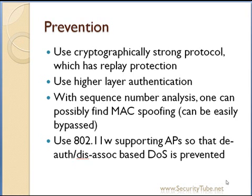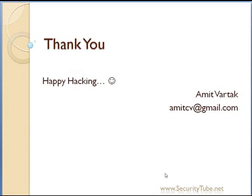You can possibly use IEEE 802.11w-supporting access points so that deauthentication and disassociation-based DoS attacks can be prevented. You can also go ahead and use some overlay security mechanisms to detect MAC spoofing attacks. And that's it for this video — happy hacking, and feel free to browse securitytube.net for more wireless LAN attacks. Thank you.